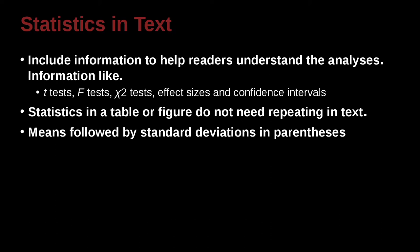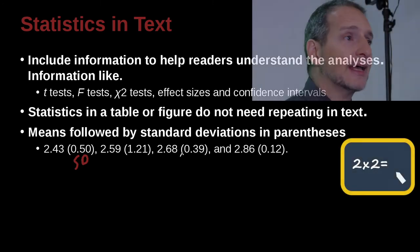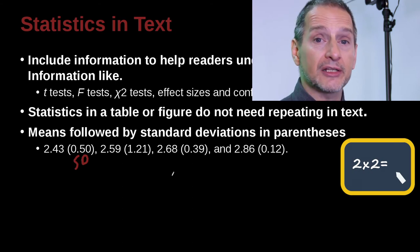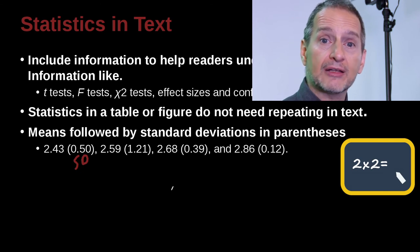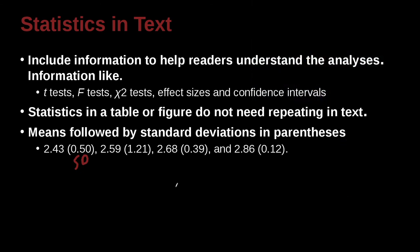Means followed by standard deviations in parentheses is kind of the standard approach. So for example, here we can see that we would have something along the lines of, here's the mean 2.43, and then here is the standard deviation, the SD, 0.50. Or here's another mean 2.59 and here is the standard deviation 1.21, and so on. So you can see that's exactly the way it works. And why is that important? Because that helps us to see how did you get the calculation. And in fact, for basic numbers we could double check the calculations and see if they're correct or if there's an issue or if something is important.